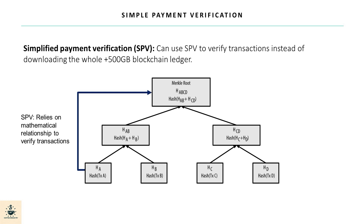In contrast, a full node running on a desktop with ample storage would track and validate the transaction all the way back to the Genesis block — the very first block on the blockchain.